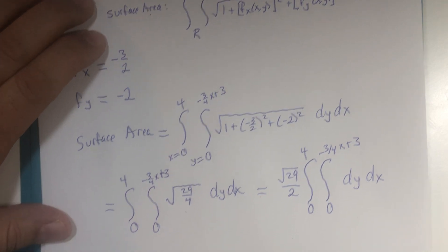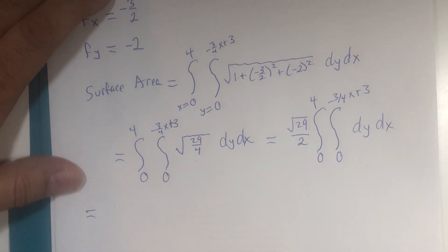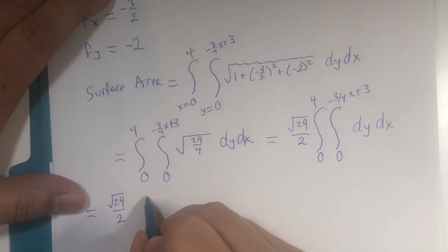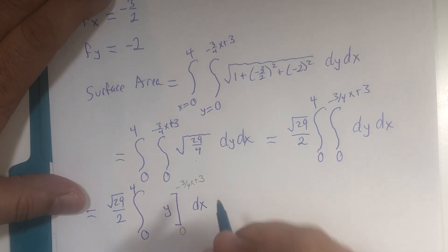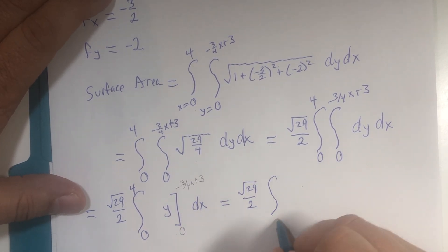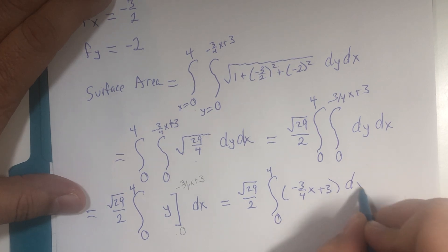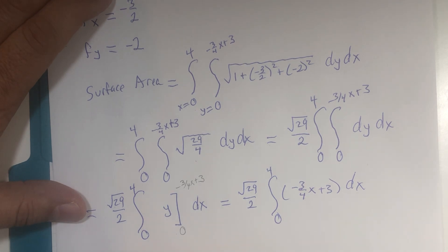Let's see how we do. Equals root 29 over 2. 0 to 4. Integral with respect to y is just y. y goes from 0 to negative 3/4 x plus 3. We'll integrate x later. If y is 0, we're happy. If y is that, I don't know if I'm happy. We'll find out. What do we get here? Negative 3/4 x plus 3. This shouldn't be too bad. Anti-derivative. Root 29 over 2. Negative 3/8 x squared plus 3x. Where x goes from 0 to 4.